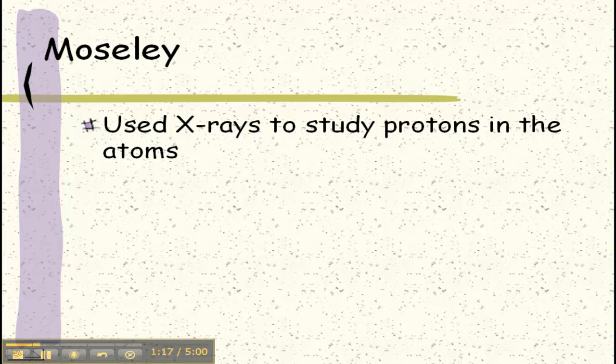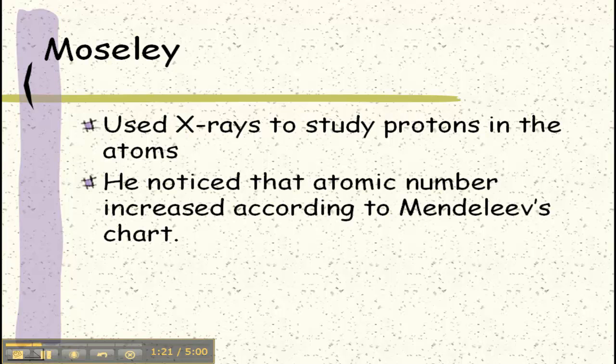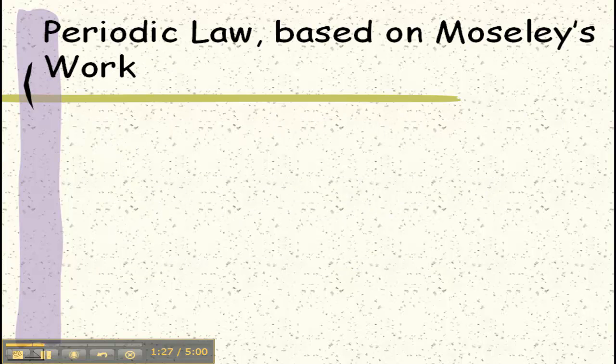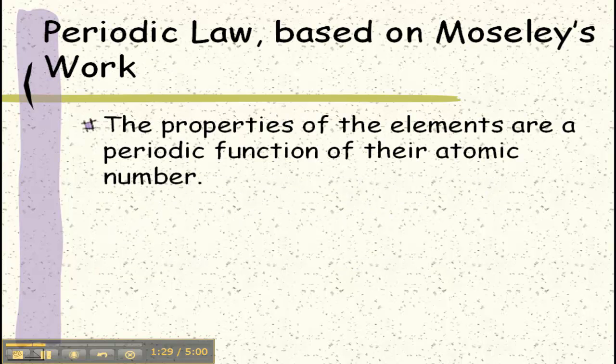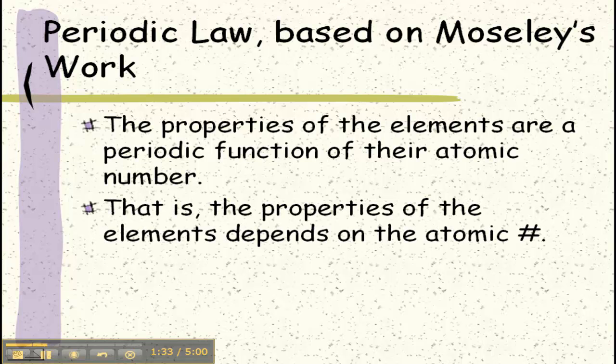Moseley came along and used x-rays to study protons and what he found was that atomic number increased according to Mendeleev's chart. At this point they felt like modern periodic law says that the properties of the elements are a function of their atomic number, meaning that the properties of the elements depend on the atomic number. We know now that neither one of those is true.